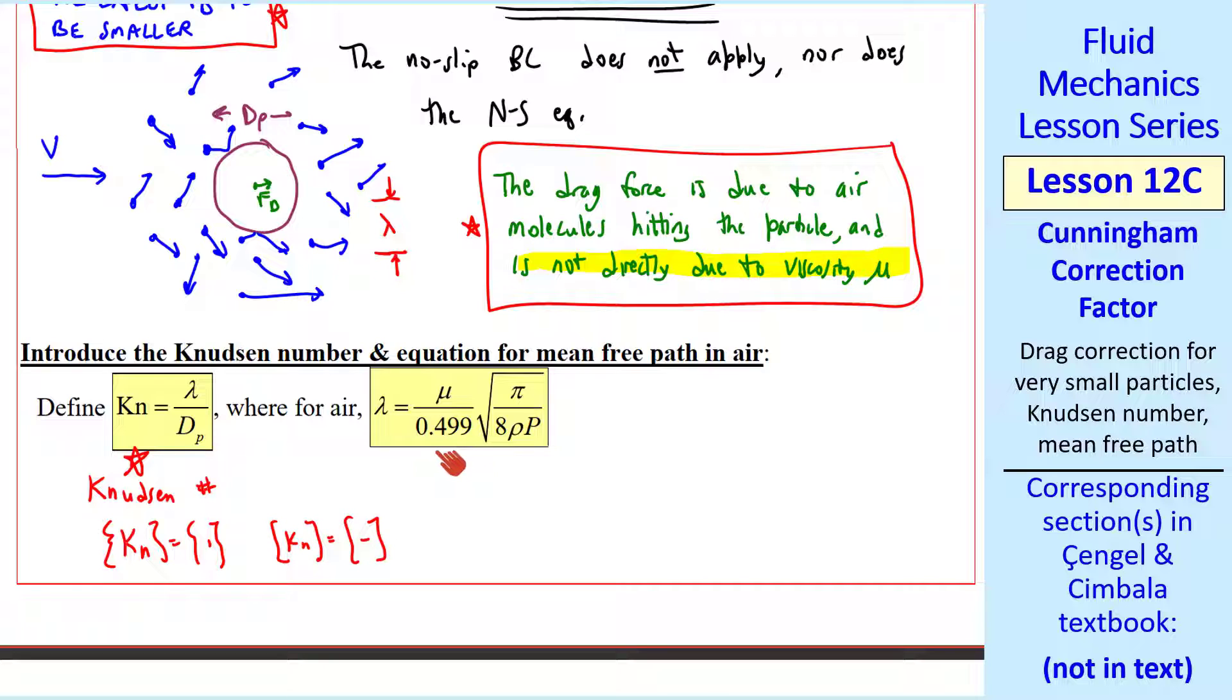Here's an equation for lambda, the mean free path. The dimensions of lambda are length. Since it's an average distance between air molecules, typical units are microns.